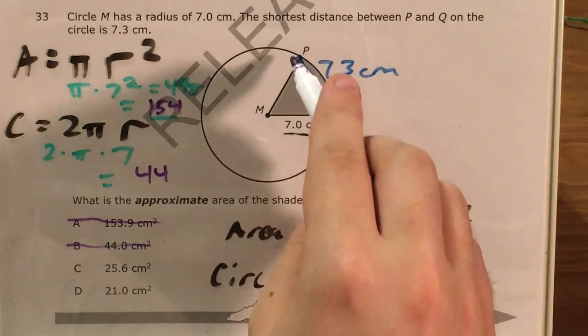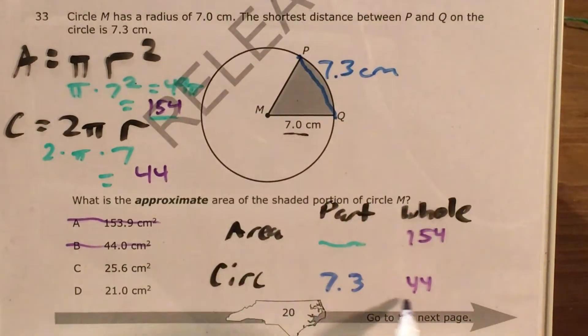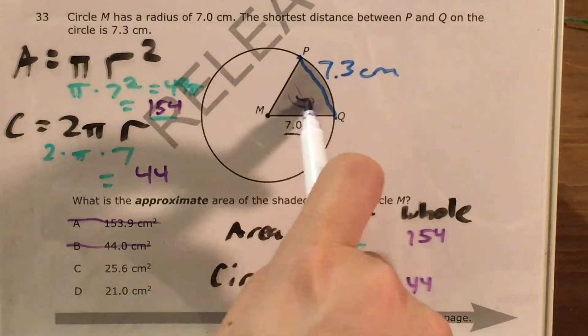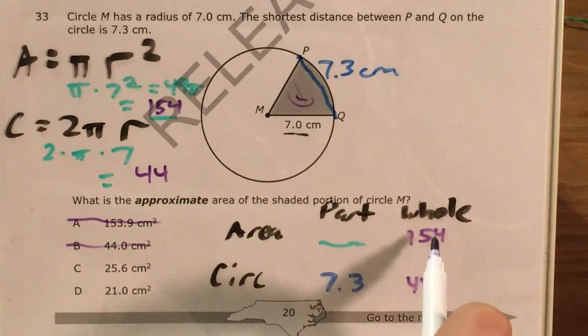So the idea is that 7.3 represents the same portion, the same percentage, the same fraction, however you want to think of it, of 44 as the area of this thing represents of 154. So let's go ahead and use cross-multiplying to figure that out.